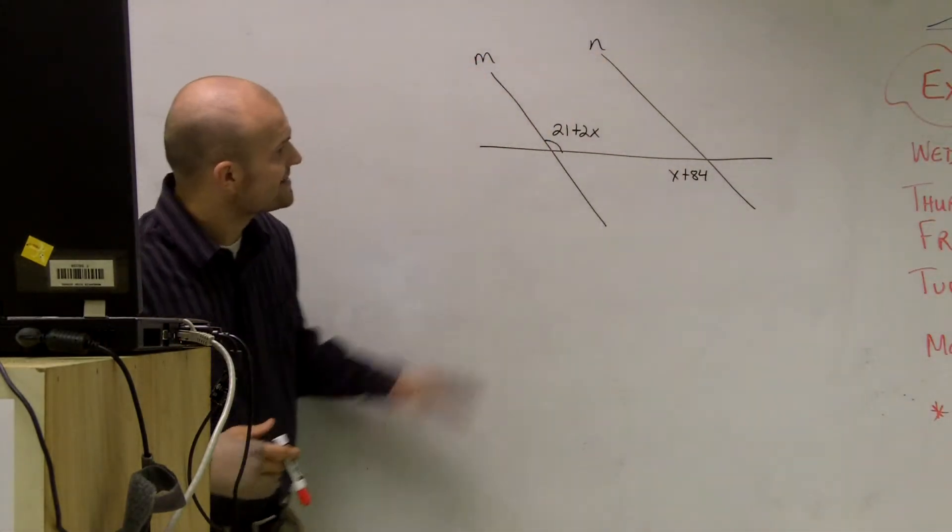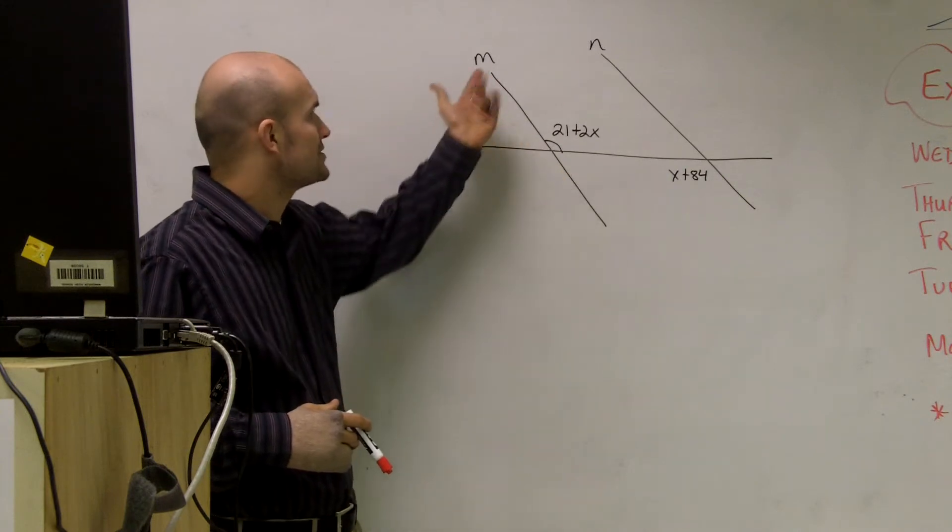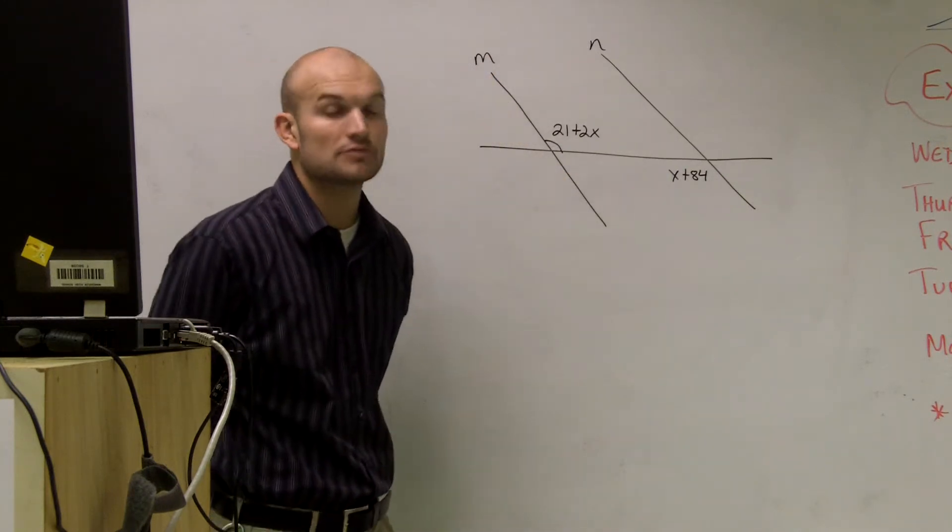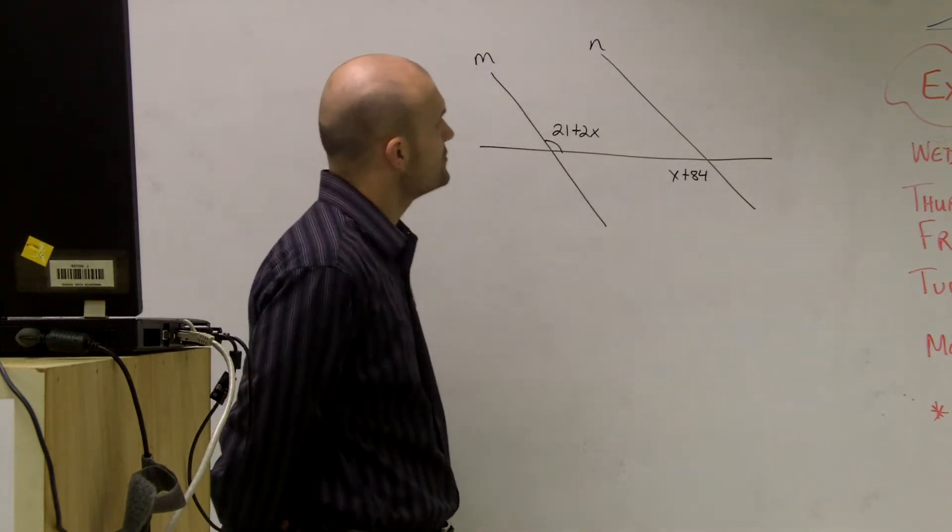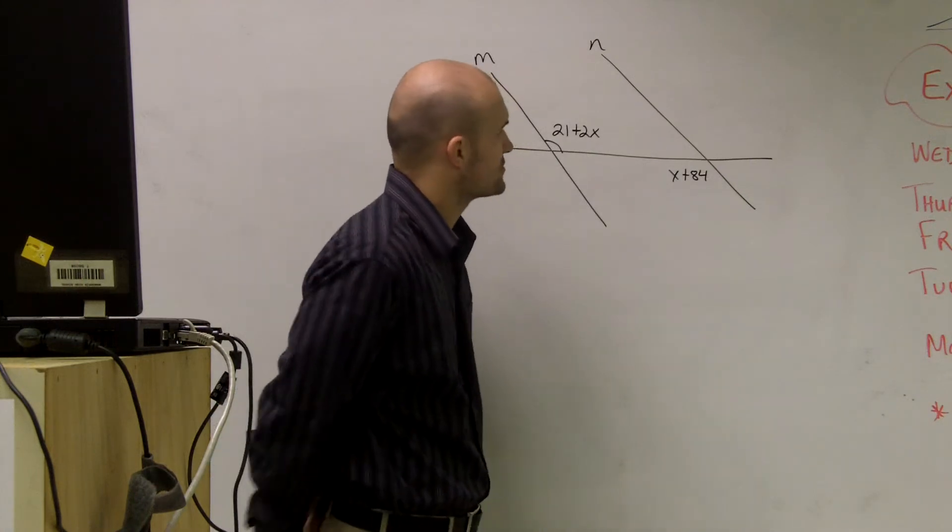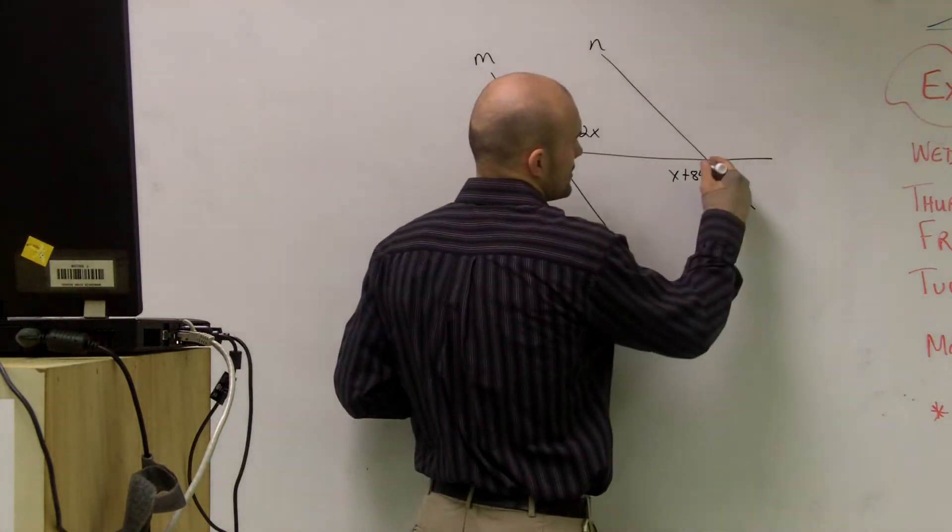What this problem is asking us to do is determine if my two lines m and n are equal to each other. The way we're going to do that is we have two angles, which we call alternate interior angles.